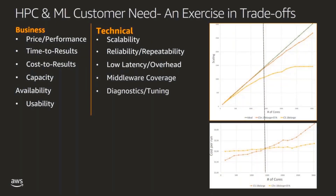Starting with customer need, HPC and ML customers have to constantly figure out trade-offs between business and technical needs on an org-wide, project-wide, or team-wide basis. The graphs on the right compare scaling curves for a CFD simulation across C5 with TCP/IP networks and C5N instances with EFA, as well as the cost to completion between the two. The black dashed line shows a crossover point where EFA becomes a clear winner in terms of cost to results — specifically, if you use more than 1,400 cores.